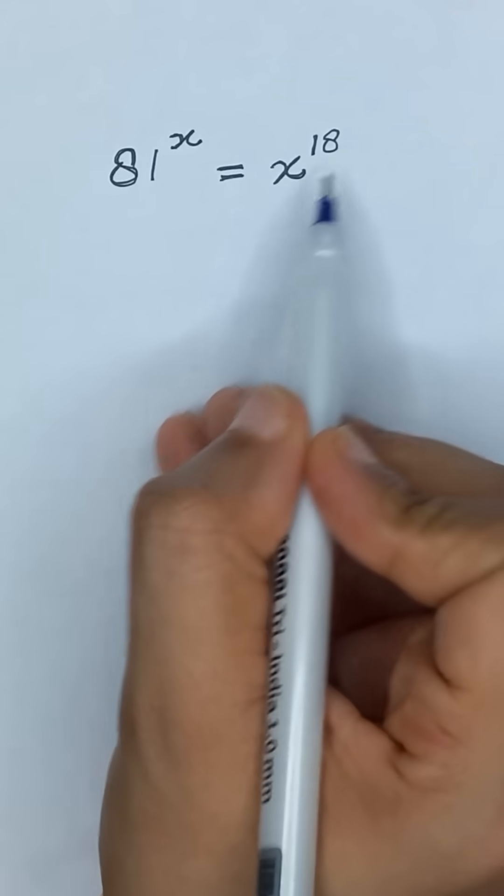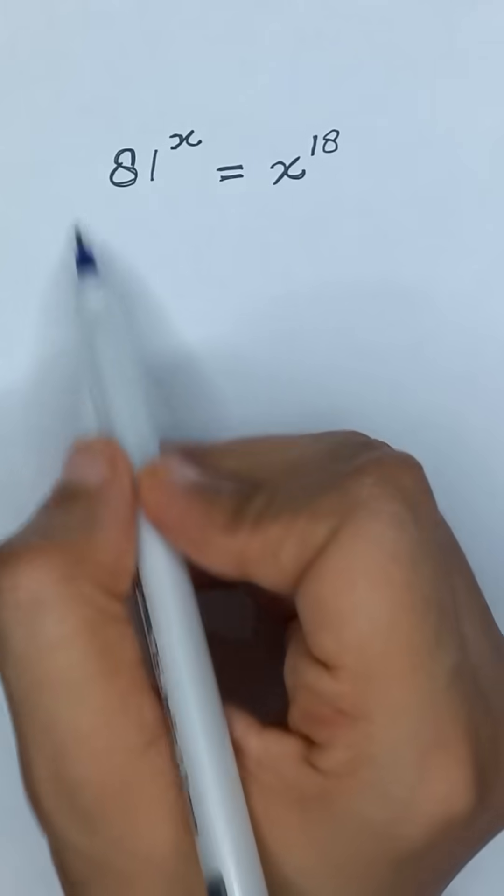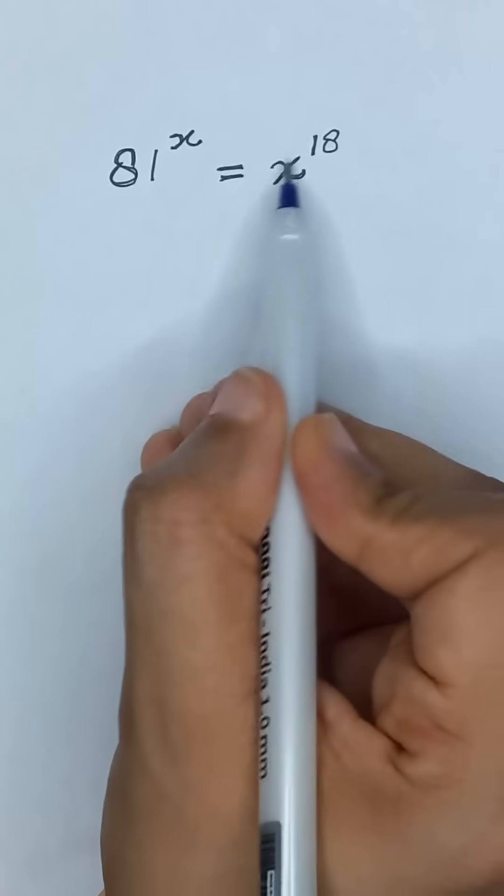81 to the power x is equal to x to the power 18, and we will solve this exponential equation for x.